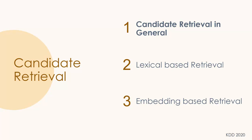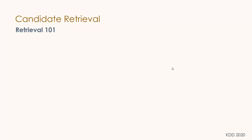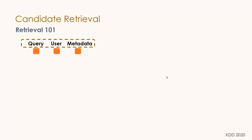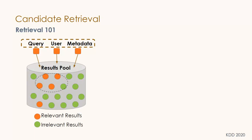Let's go over candidate retrieval, kind of like a 101. In general, retrieval is one of the fundamental components in both search and recommendation. Imagine we have different types of input — from search and recommender systems it can be a query, user profile, or metadata. We have a result pool with relevant results, and we want to retrieve the most relevant set based on our input.